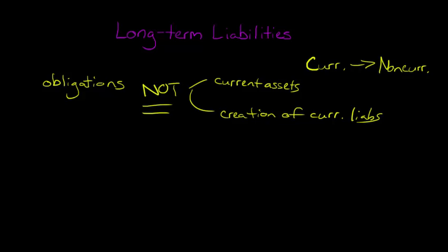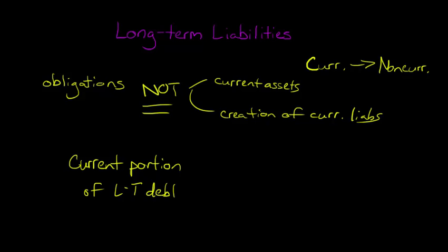This has to do to an extent with the firm's intention. Consider the current portion of long-term debt. Let's say the firm has some bonds and there's an amount of, say, a thousand dollars that's going to come due this year — we call that the current portion of long-term debt.